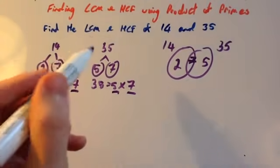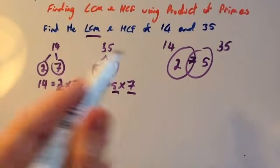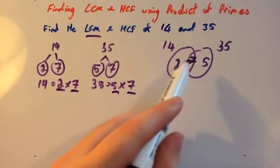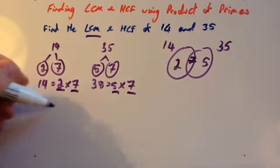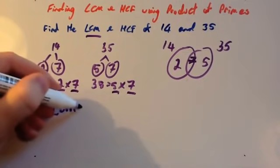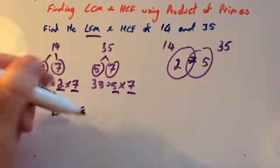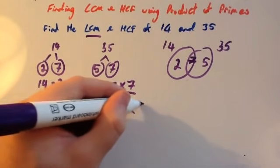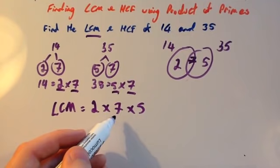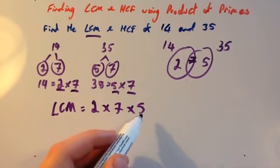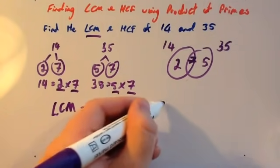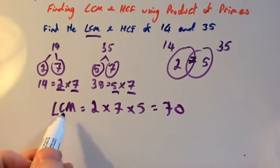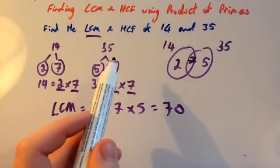To find the lowest common multiple, you multiply all the prime numbers in the diagram together. So the lowest common multiple would be 2 times 7 times 5. 2 times 7 is 14, and 14 times 5 is 70. So the lowest common multiple of 14 and 35 is 70.